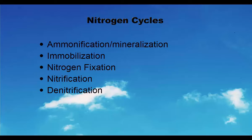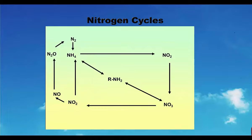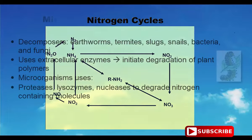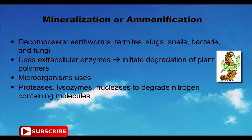The nitrogen cycle involves mineralization, immobilization, nitrogen fixation, nitrification, and denitrification. Mineralization or ammonification is carried out by decomposers — earthworms, termites, slugs, snails, bacteria, and fungi — which use extracellular enzymes to initiate degradation of plant polymers. Microorganisms use proteases, lysosomes, and nucleases to degrade nitrogen-containing molecules.